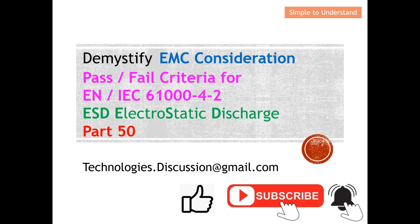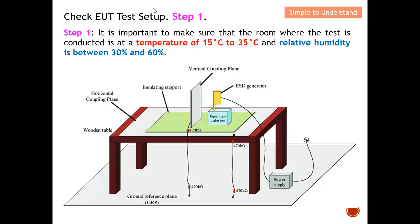Let's understand the 10 steps to check your EUT test setup for this standard. Step number one: it is always very important to ensure that the room where the test is conducted has a temperature between 15 to 35 degrees Celsius, and the humidity in the room must be between 30% to 60%.